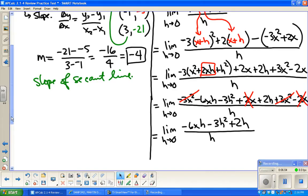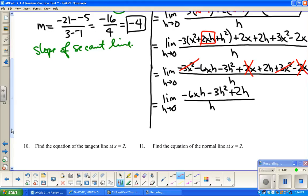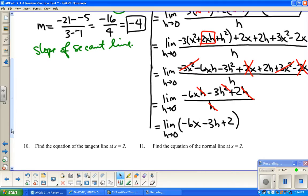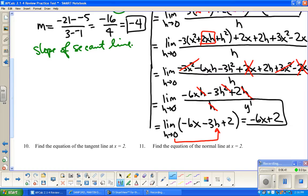So all I'm left with is a bunch of stuff that has h's in it. Since every single term has an h in it, I can divide out a common h. And then at this point, I can finally substitute h equals 0 in. And what I'm left with now is negative 6x plus 2. And this is y prime. This is dy dx. That is the derivative. That is the instantaneous rate of change for any x value.